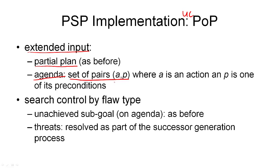Search control of the algorithm is then by flaw type. That means we have the unachieved sub-goals as part of our agenda, and every time we go through the algorithm we select one of the unachieved sub-goals and remove that flaw from our partial plan, potentially introducing others. Threads, on the other hand, are resolved as part of the successor generation — internally to the algorithm, we remove all the threads so that when we generate a new search node, it will have no threads in it.